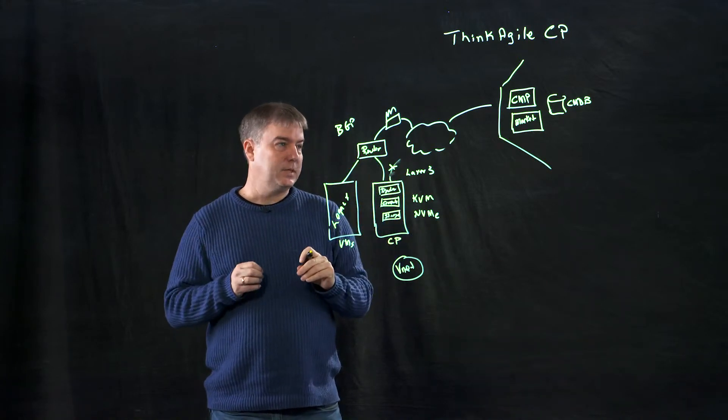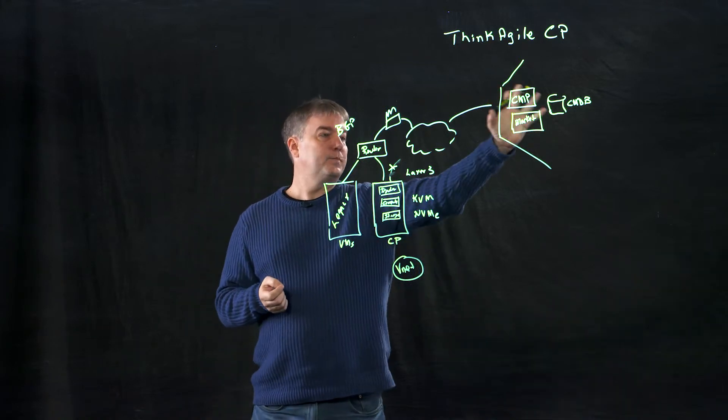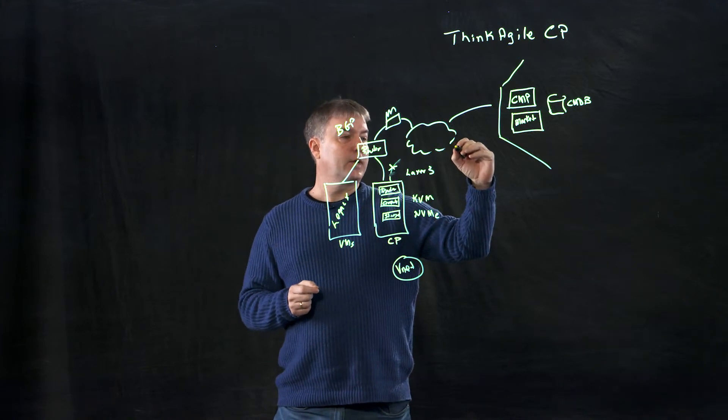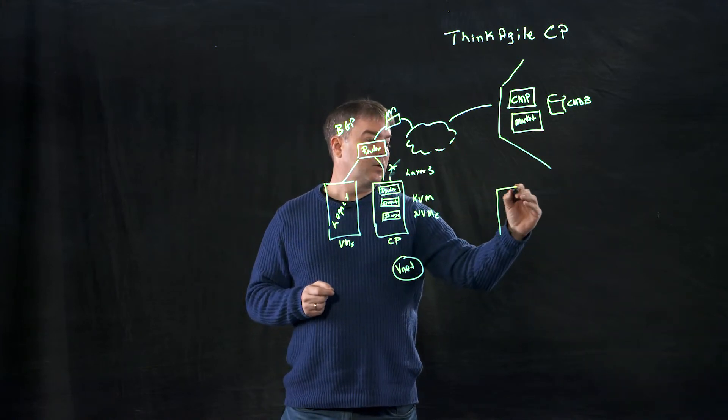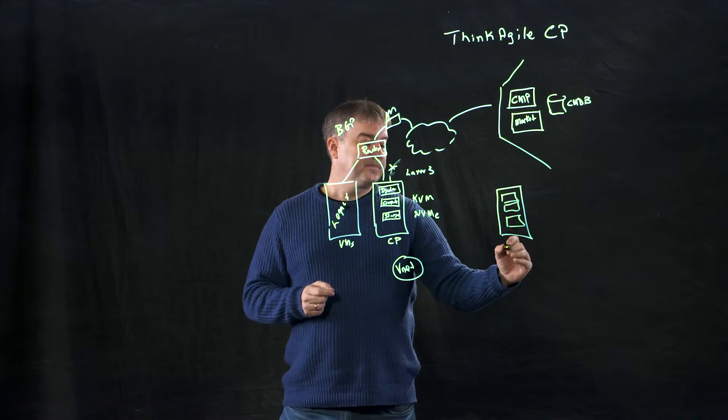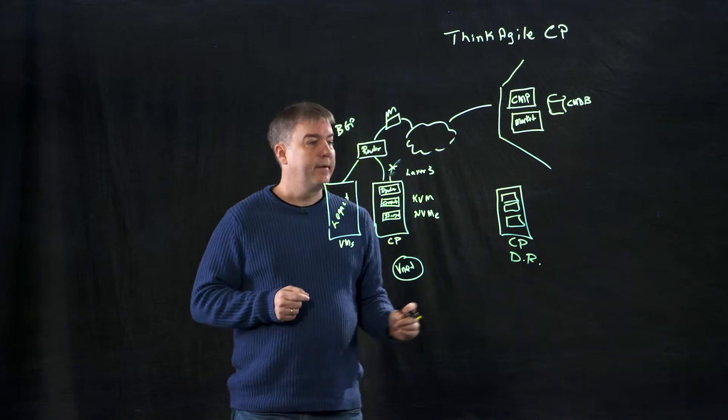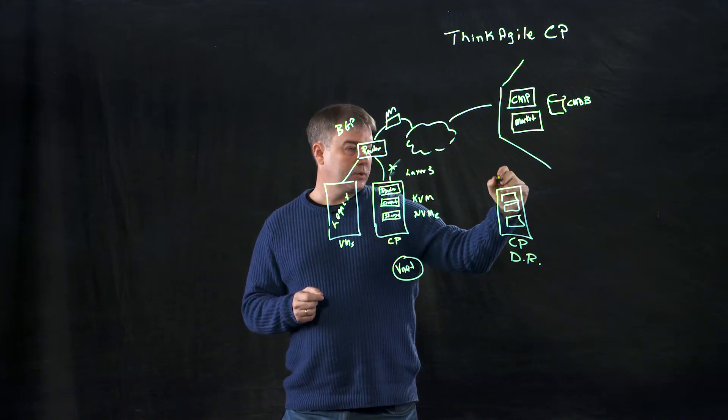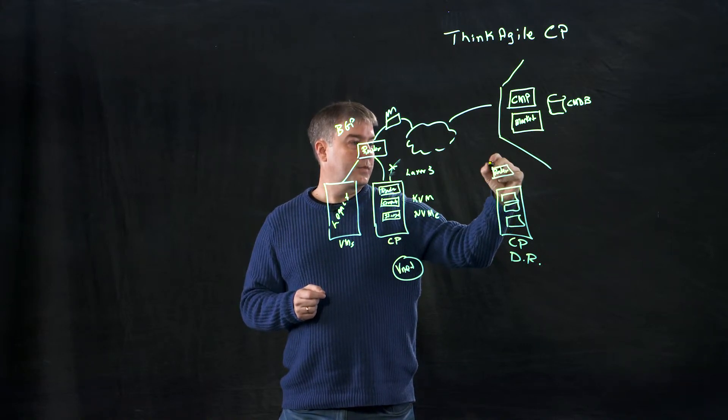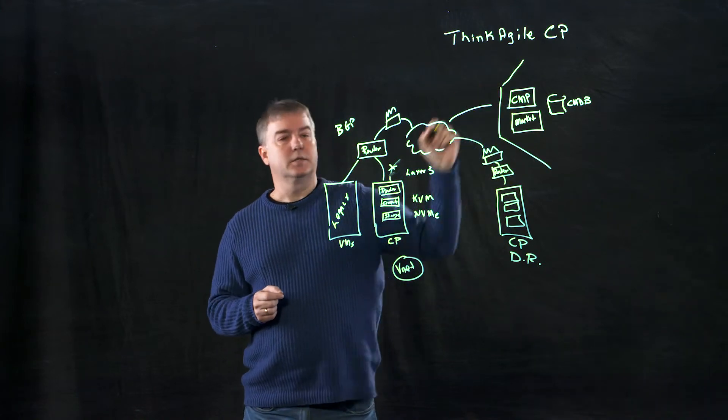Now the neat thing about CP is let's just say you wanted to build a disaster recovery site. Well, you've already built this out. This is all in production. Now if you wanted to build out a disaster recovery site, you go over to your new location, you build out your ThinkAgile CP. And this is CP. We'll just call it CPDR. You connect up this router to that site router. You connect it up to that site firewall.